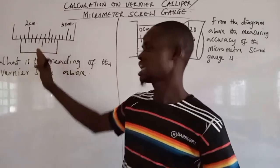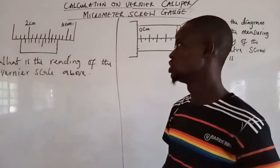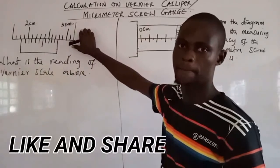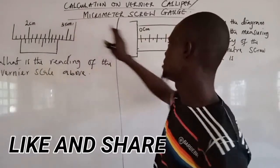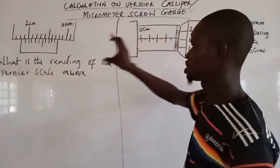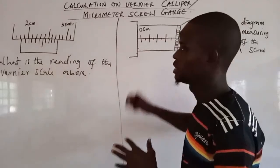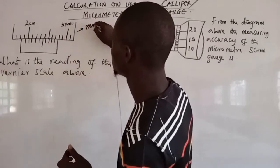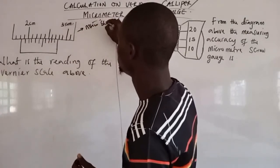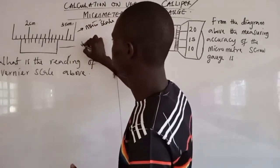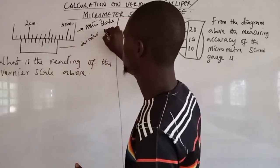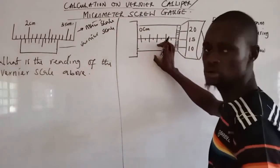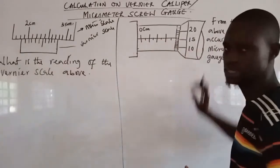We are given an example above. This is an example of a vernier caliper. A vernier caliper and micrometer screw gauge both have two scales — they have the main scale and the vernier scale. The same applies to the micrometer: it has the main scale and the vernier scale.